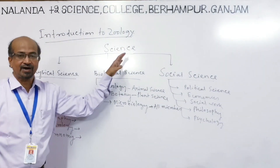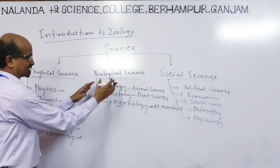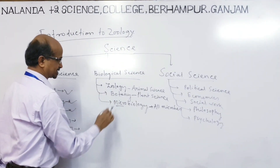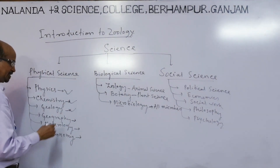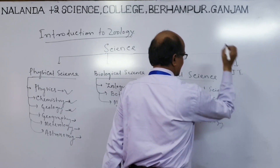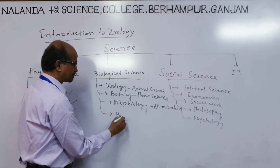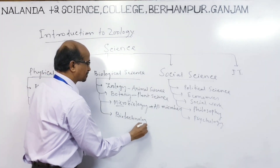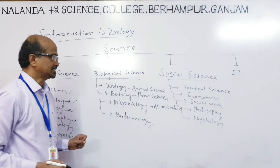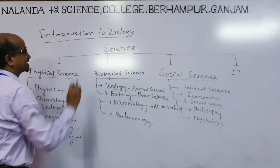Since science is a vast subject, that is why people choose Social Science, Physical Science, or Biological Science. In PLUS2, you prefer Physics, Chemistry, Geology, Geography, Botany, and Meteorology. Here you will also read Biology, and another scientist has developed the subject at the IT level — Information Technology. Another new developed subject is Biotechnology. So generally here you read Physics, Chemistry, Geology, Botany, and our students read all these things. We will read about Geology and take the introductory class.